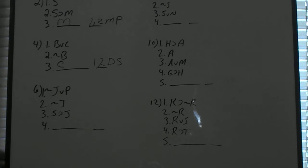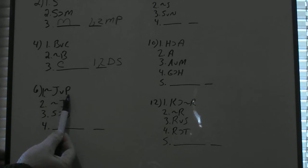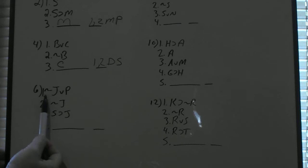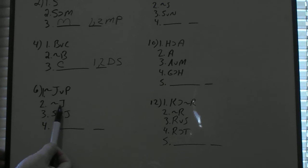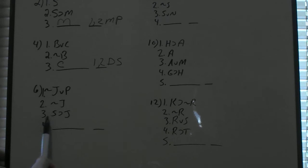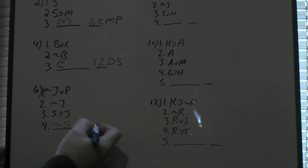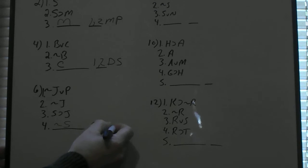For number 6, there are three lines and you're going to use two of them. Lines 1 and 2 won't work together because for disjunctive syllogism it would need to be 'not J,' but we only have 'not not J.' So we use lines 2 and 3, which set up a modus tollens: if S then J, not J, therefore not S — lines 2 and 3, modus tollens.